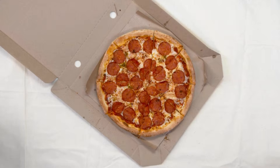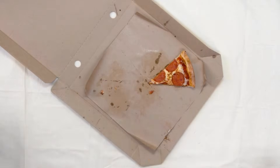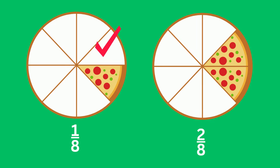Say you want a large slice of pizza, and you're offered either a slice that is one-eighth the size of the pizza, or two-eighths the size of the pizza. You can easily look at the two slices and see that two-eighths is larger than one-eighth. Let's figure out how to do the same thing, but mathematically.